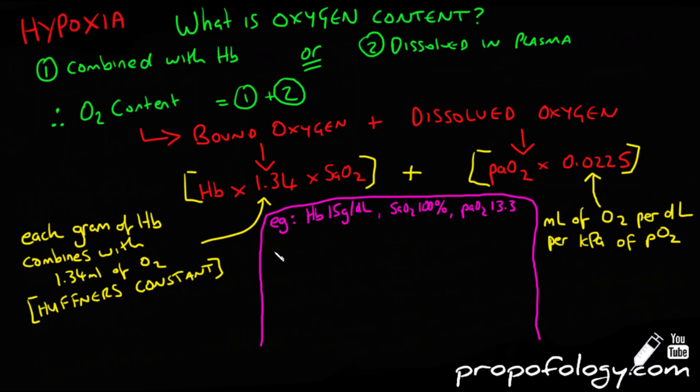So let's do a worked example. If you have a haemoglobin of 15, saturations of 100% and a PaO2 of 13.3, you would take your haemoglobin, multiply it by 1.34 and multiply it by...